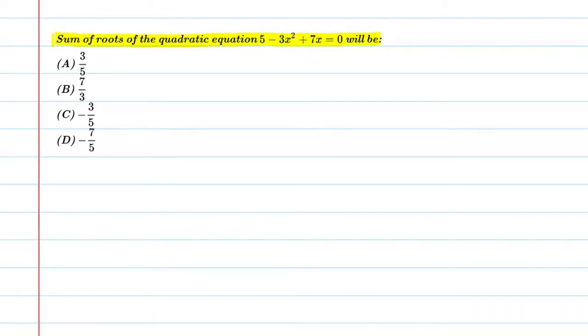So let's find the value of sum of its roots. Let's write first of all, given is 5 - 3x² + 7x = 0. Now solve it.